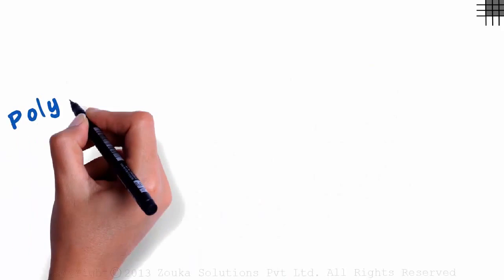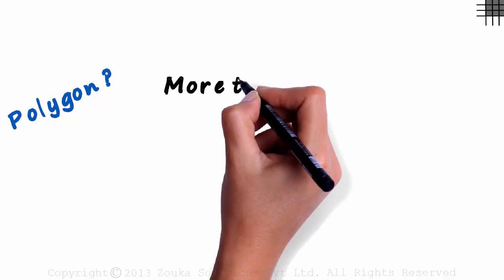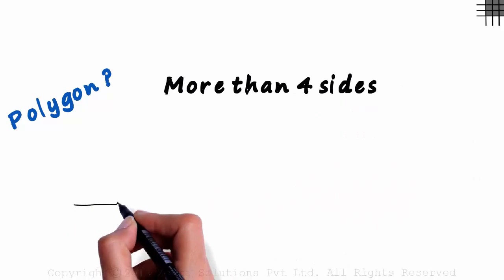What is a polygon? Many people define it as a closed figure which has more than four sides. Something like this.